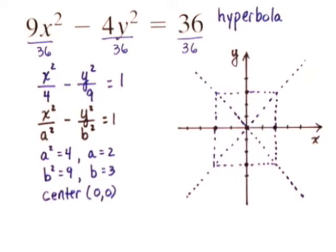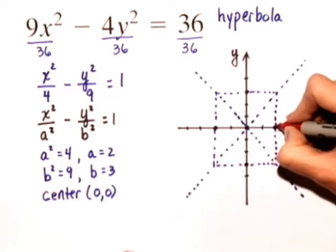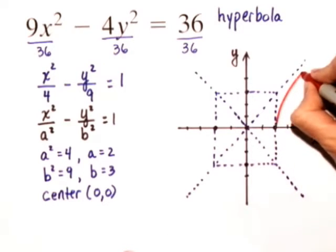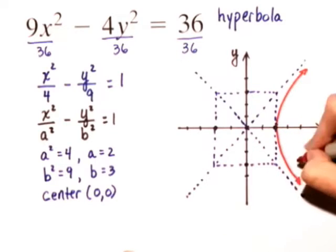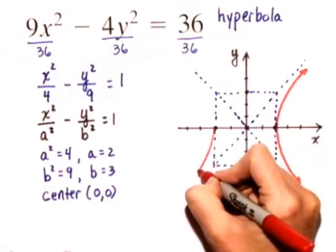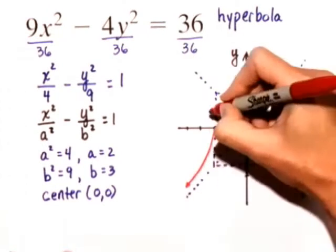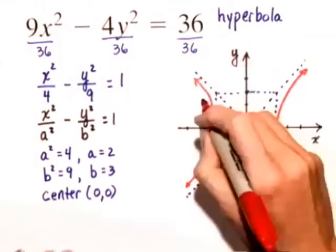Now, we need a couple more pieces of information. We actually have enough to sketch the branches of the hyperbola right now, so I'm going to sketch those in red. From the vertex 2, 0, I'll draw the branches out going toward the asymptotes. And also, from the other vertex, negative 2, 0, I'll draw the branches.